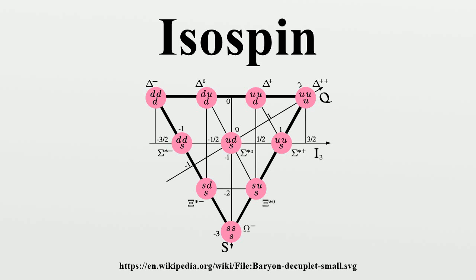This term was derived from isotopic spin, a confusing term to which nuclear physicists prefer isobaric spin, which is more precise in meaning. Isospin symmetry is a subset of the flavor symmetry seen more broadly in the interactions of baryons and mesons. Isospin symmetry remains an important concept in particle physics, and a close examination of this symmetry historically led directly to the discovery and understanding of quarks and the development of Yang-Mills theory.